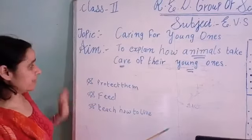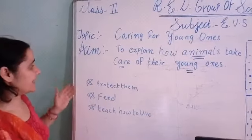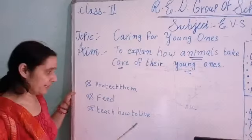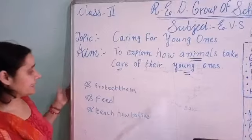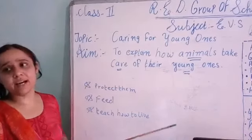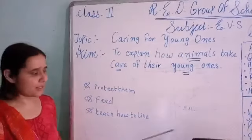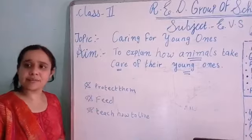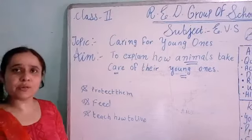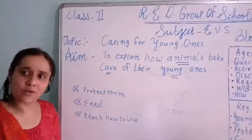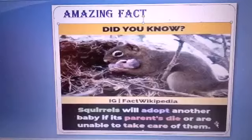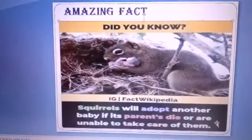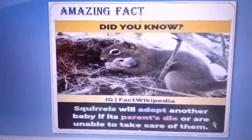Now it is time for summarization. What we have done today: to explain how animals take care of their young ones. Animals take care of their young ones — they protect them, they feed them, and they teach them how to live in their surroundings.